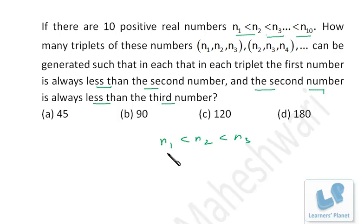This means the three numbers are written in ascending order, right? So a simple conceptual problem. See, we have to make the triplets and we have to select three numbers from these ten numbers. So how many ways can we select? 10C3. Now we have to make the arrangement where n₁ < n₂ < n₃.